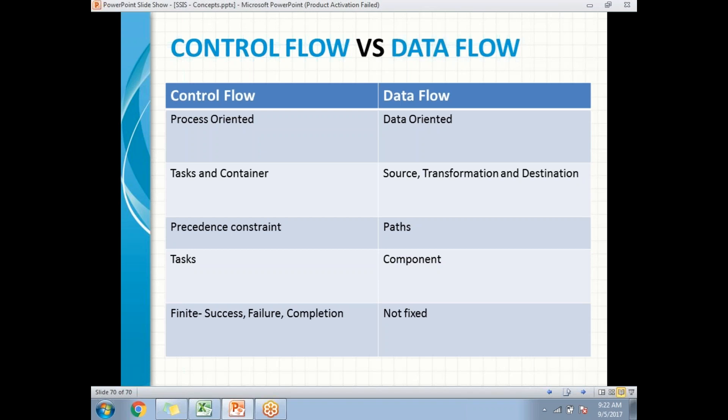But the smallest unit in the data flow is a component. The outcome of a control flow is success, failure, or completion.